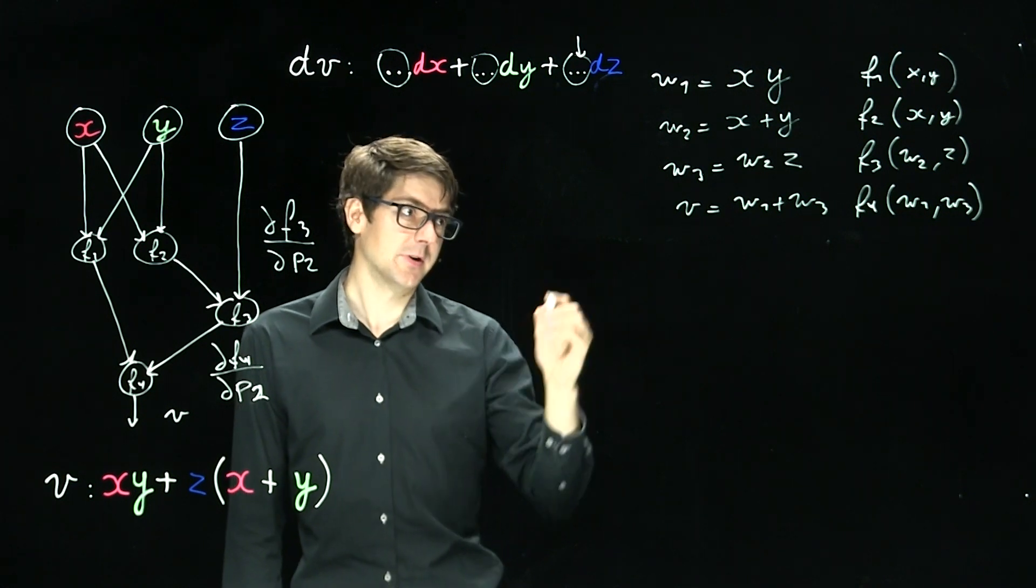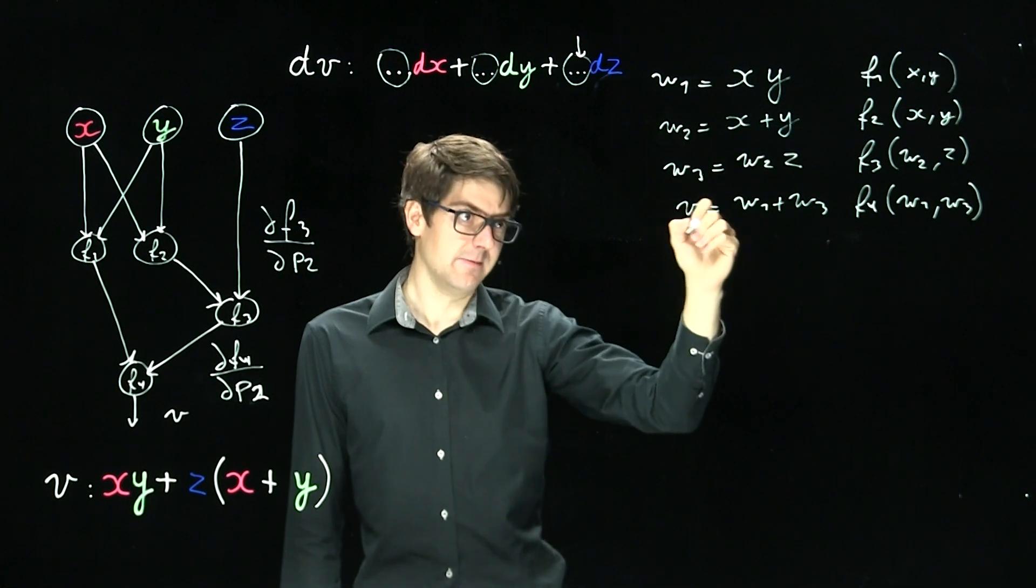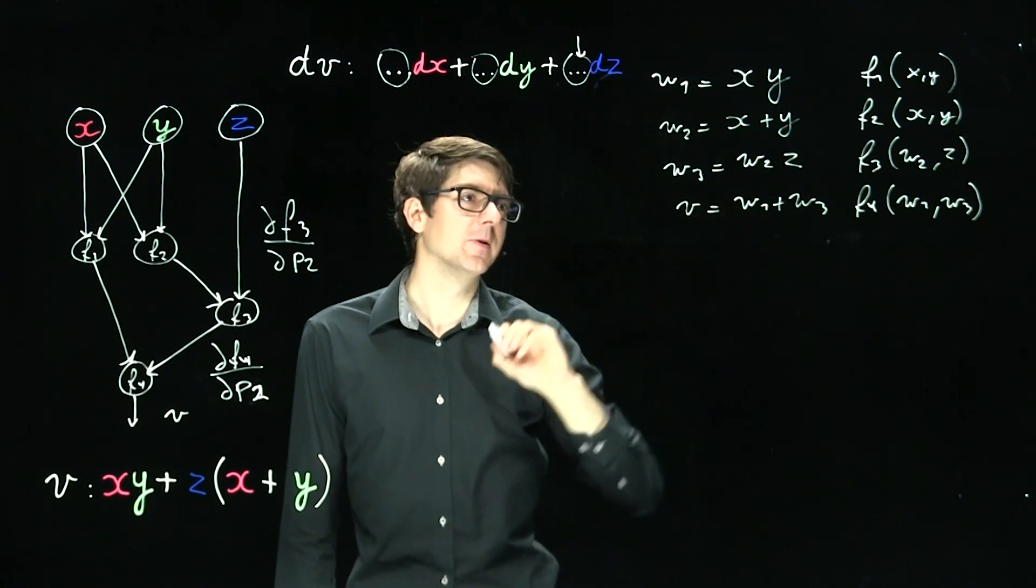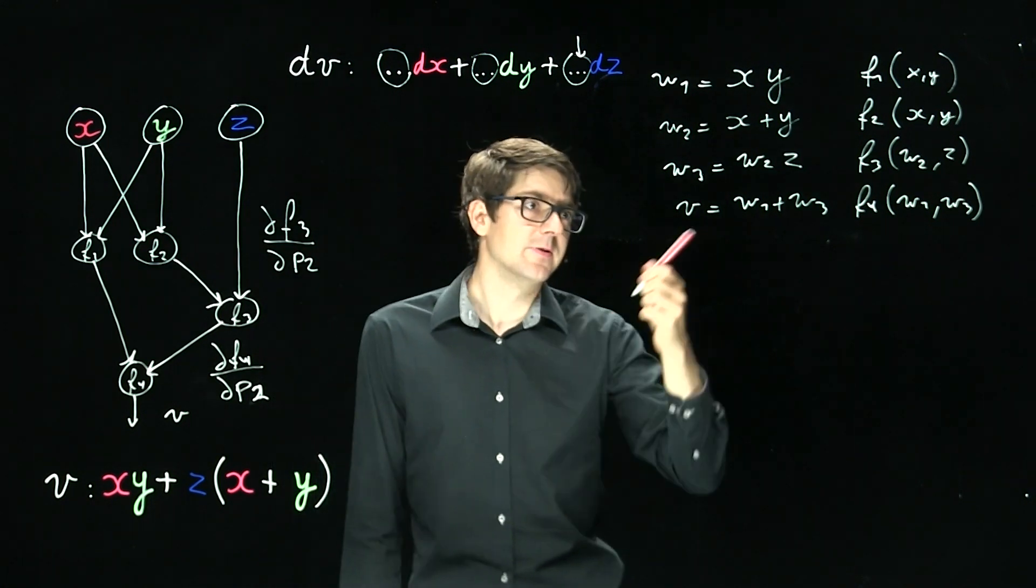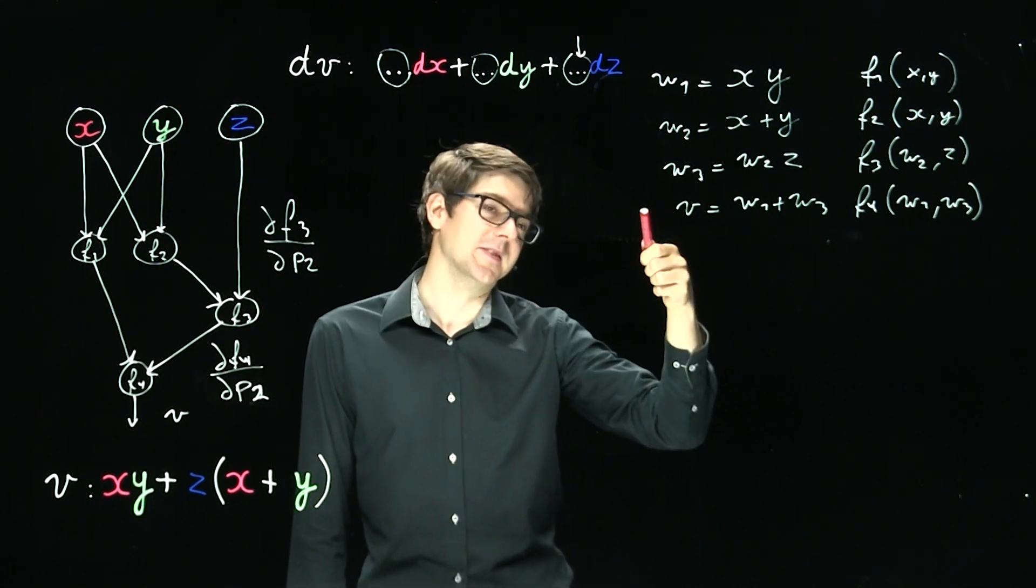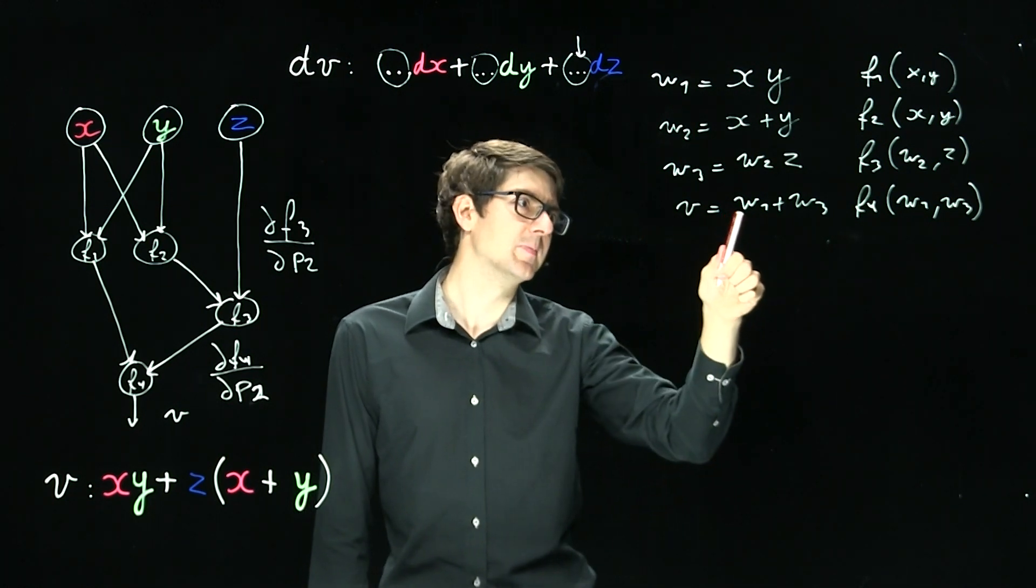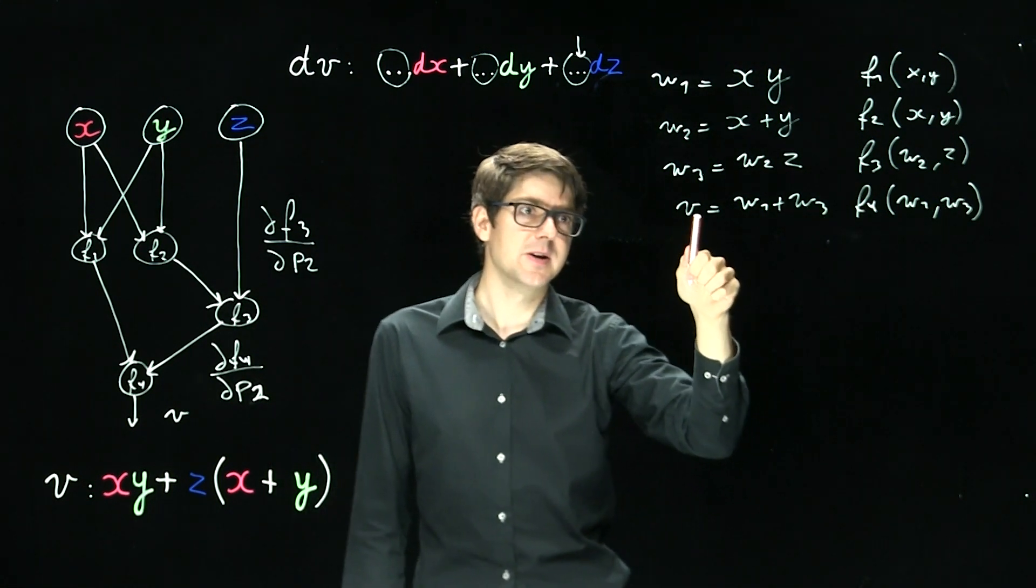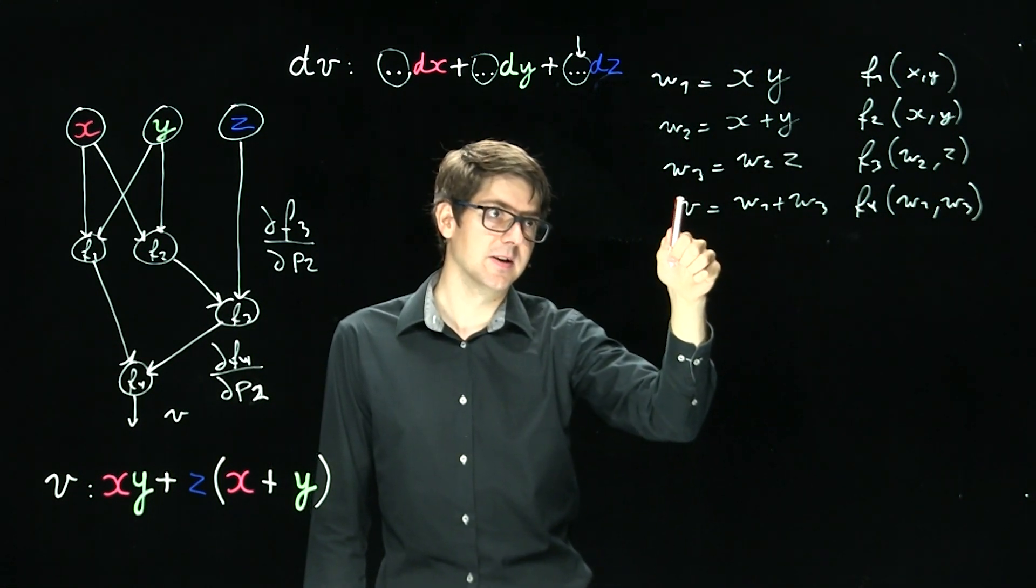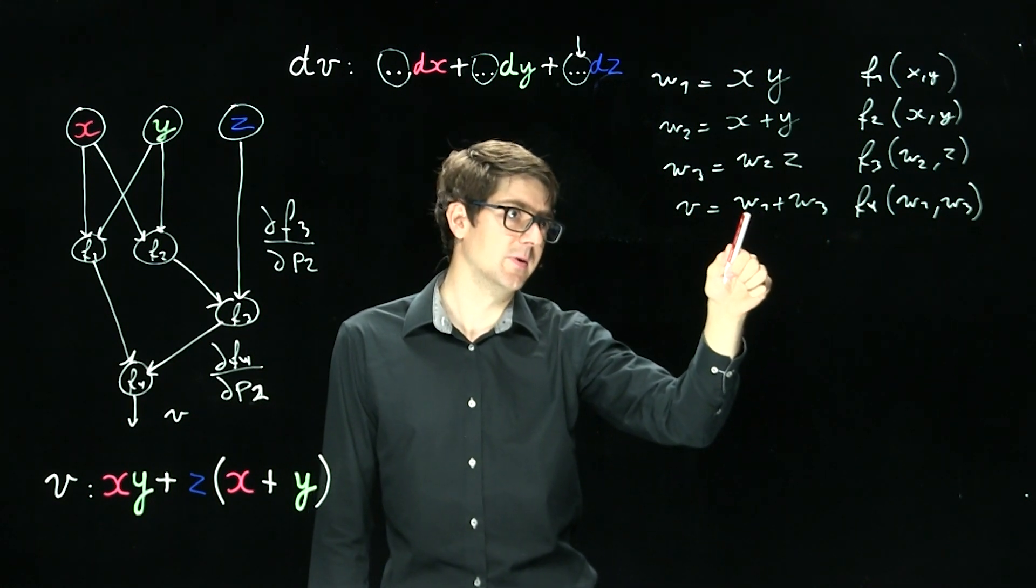So how does it work? We first do a nominal pass assigning values to all these variables. And then we do a reverse sweep. So the reverse sweep starts at the end naturally. So this is one expression. It's dependent on W1 and W3. And the information arising from V is going to bubble upwards towards the nodes 1 and 3.